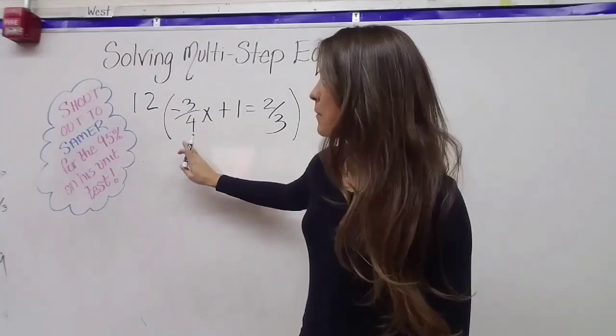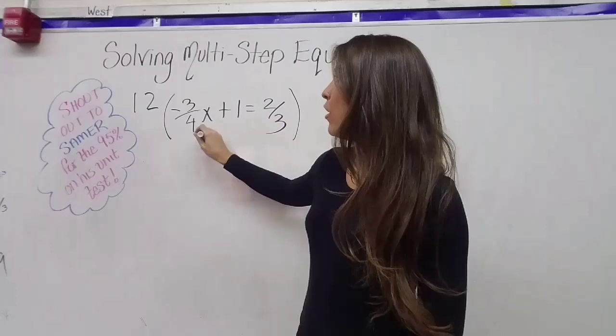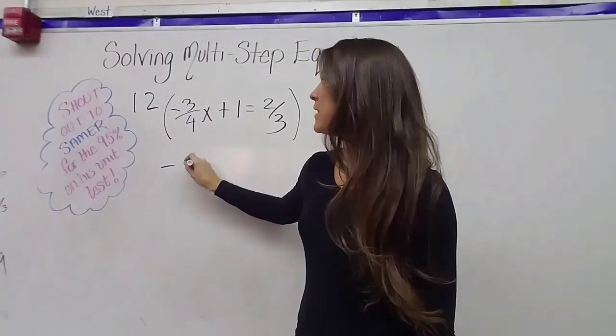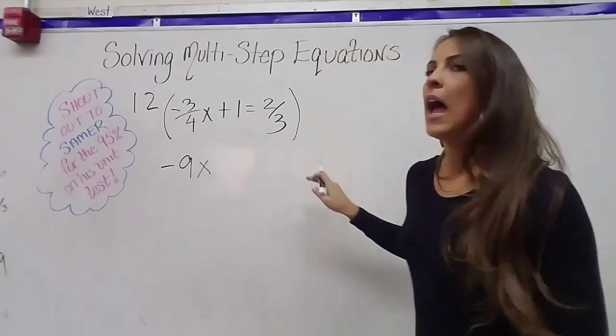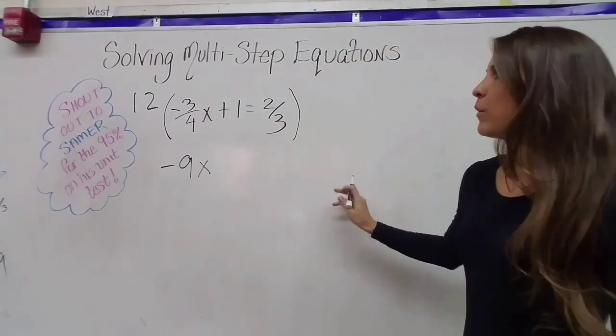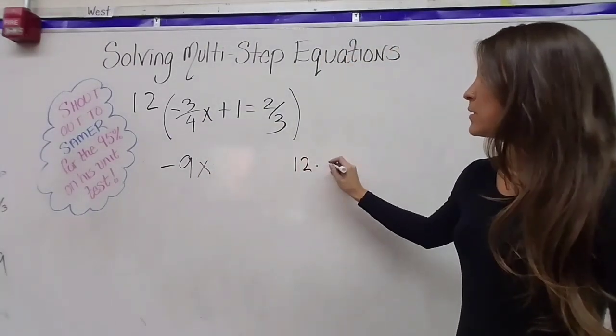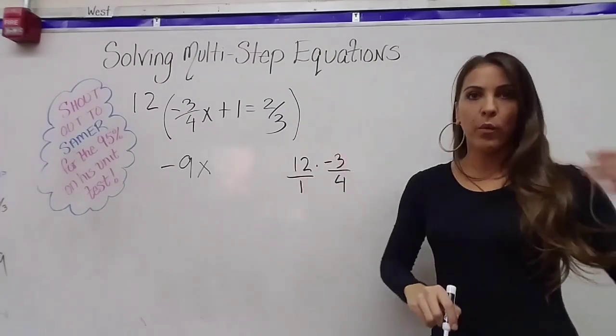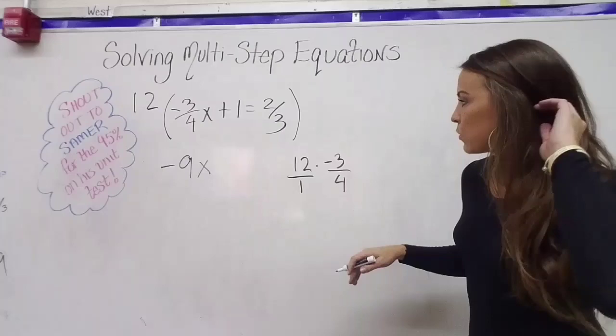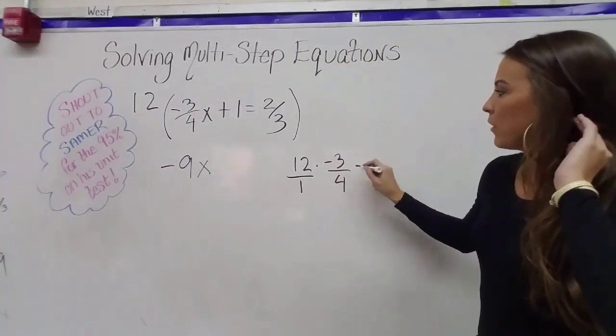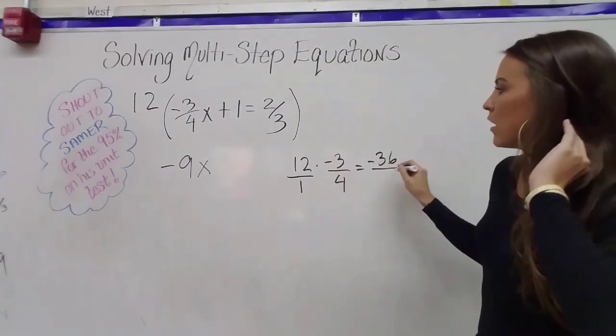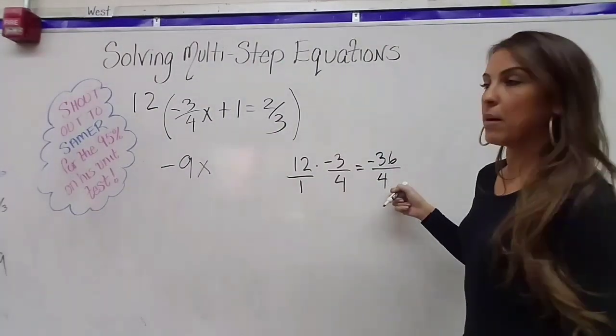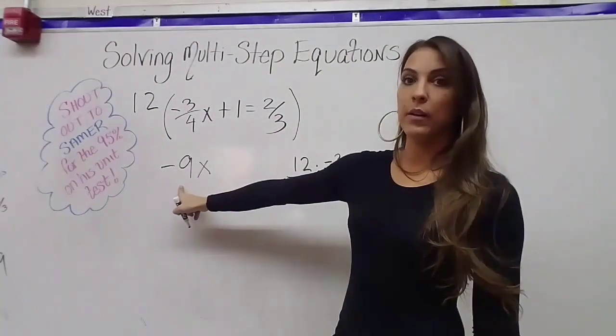12 times negative three over four. So four goes into 12 three times. Three times negative three is negative nine x. I'm going to do it on the side a long way in case anyone needs to see it. So 12 times negative three over four. I'm going to write my 12 over one because 12 divided by one is still 12. 12 times negative three is negative 36. One times four is four. Negative 36 divided by four is negative nine.